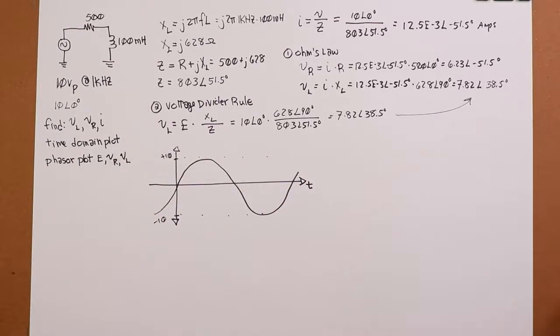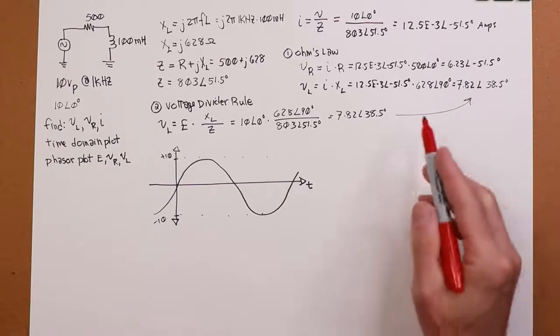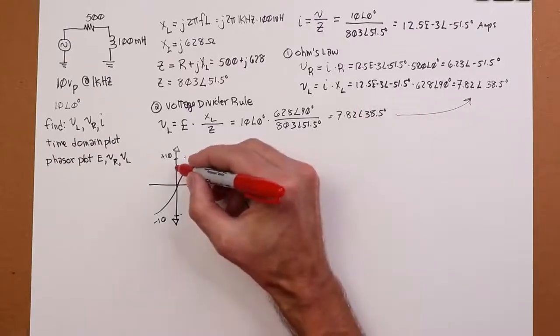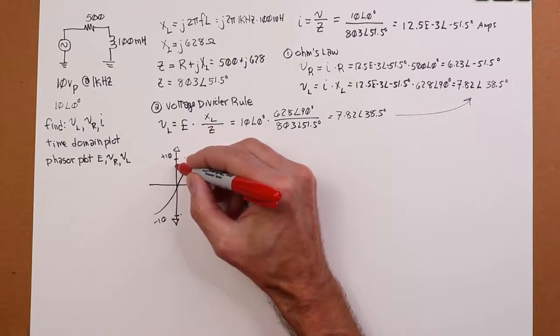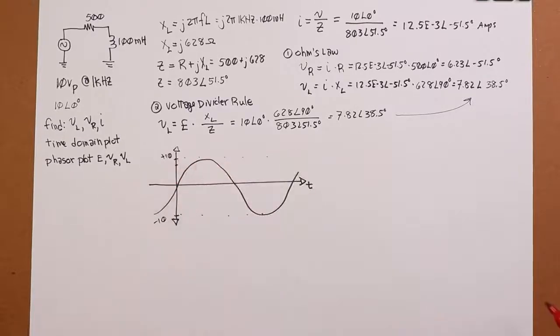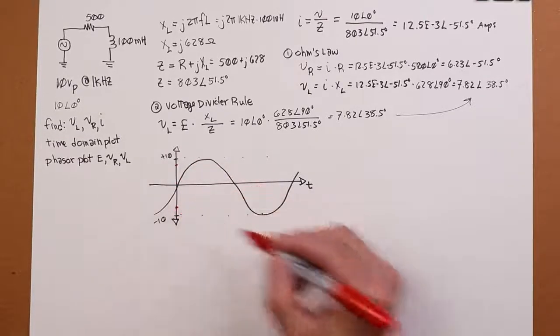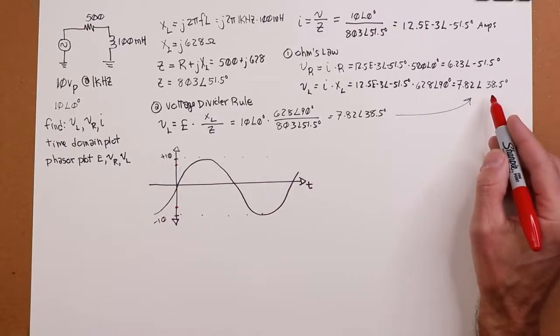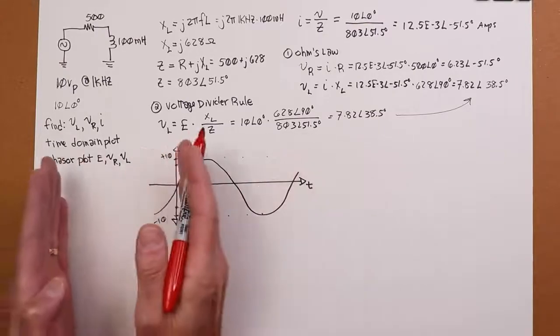So our waveform is going to look, try to draw a sine wave as nice as I can, which is not very nice at all, but you get the idea. Just pretend that's a nice sine wave. If we were looking at this on a scope, the time period from here to here would be 1 over 1 kilohertz or 1 millisecond. 1 millisecond, half a millisecond, so forth. Now let's take a look at the other parts.